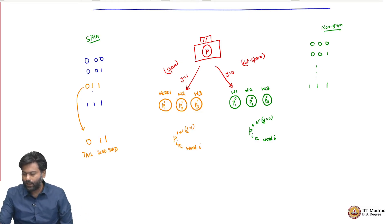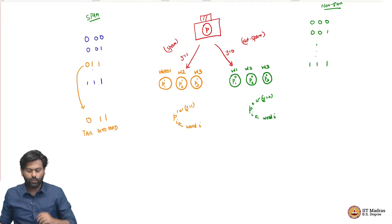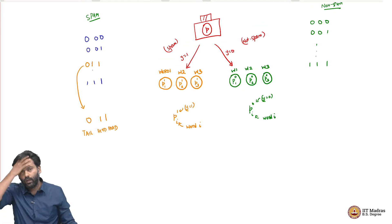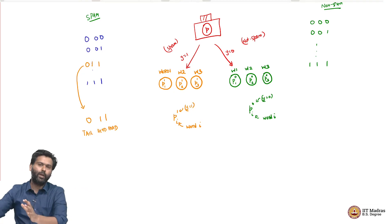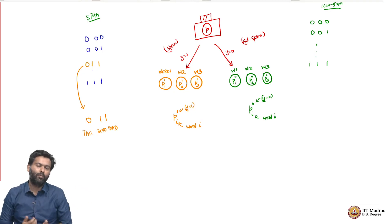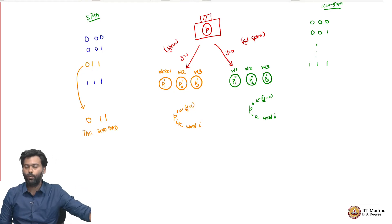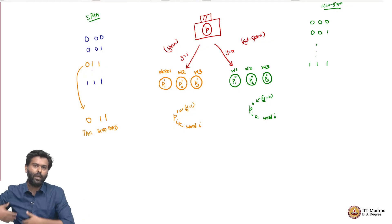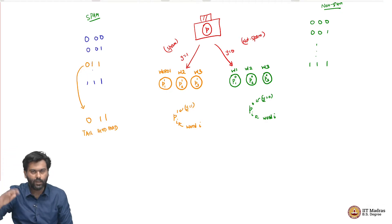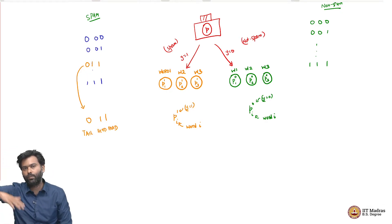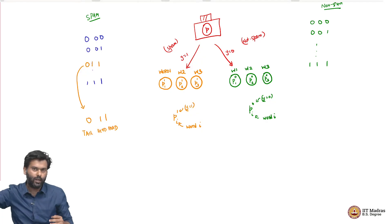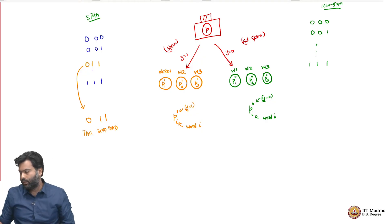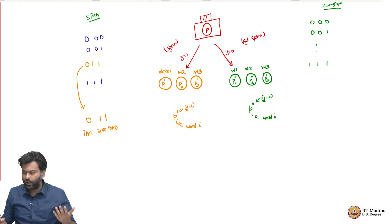So basically the story is as follows. You start with flipping the first coin that decides which room you have to enter, the spam room or the non-spam room. If it falls heads, you enter the spam room and inside the spam room you have d coins. You toss each one to generate the email. Then you repeat the same process: come out, go to the original box, flip it, see whether it is spam or non-spam, go to the corresponding room, toss the d coins, and repeat. This is how you would generate the data.